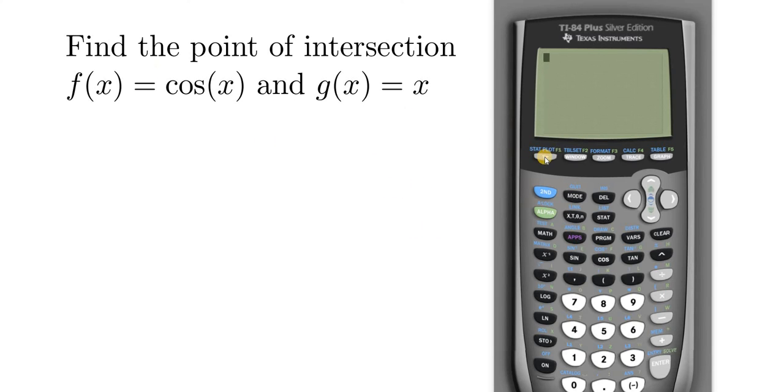Okay, so the first thing you want to do is press the Y= button here. So I'm going to click it. And then we have to enter both of these graphs. So cos(x) - cosine is right here. And then the variable key is x, and then parentheses. Then you want to hit enter. In the second row you'll enter the other function, so x. Then I'll go ahead and hit enter.